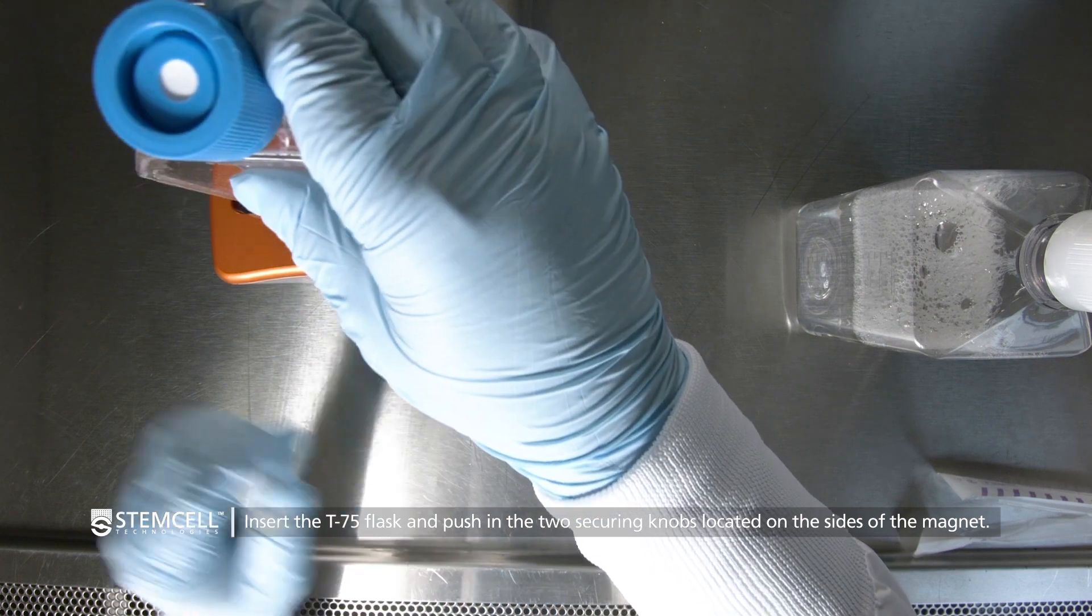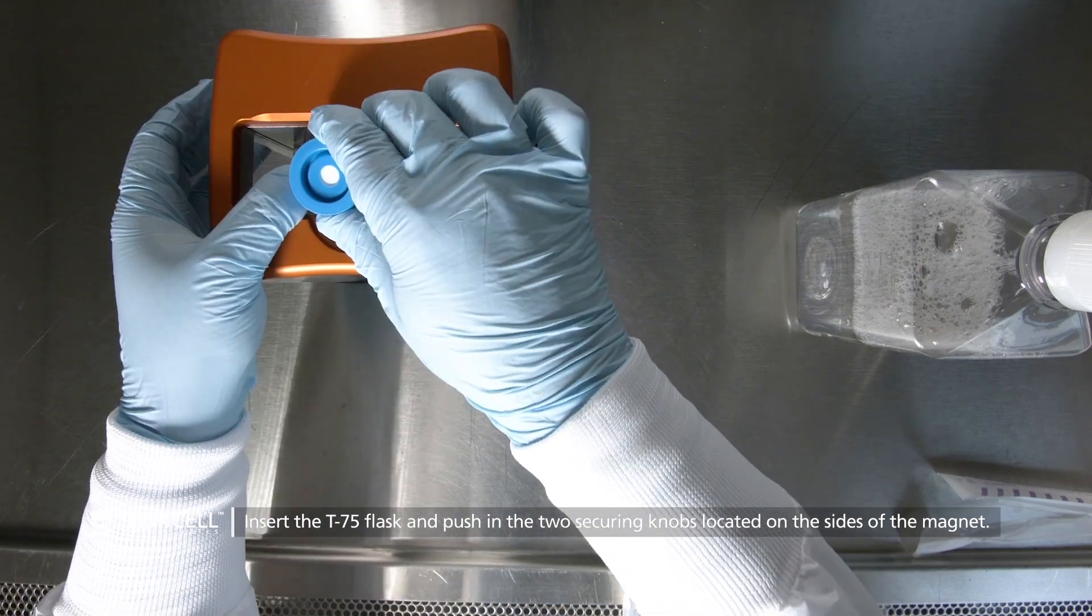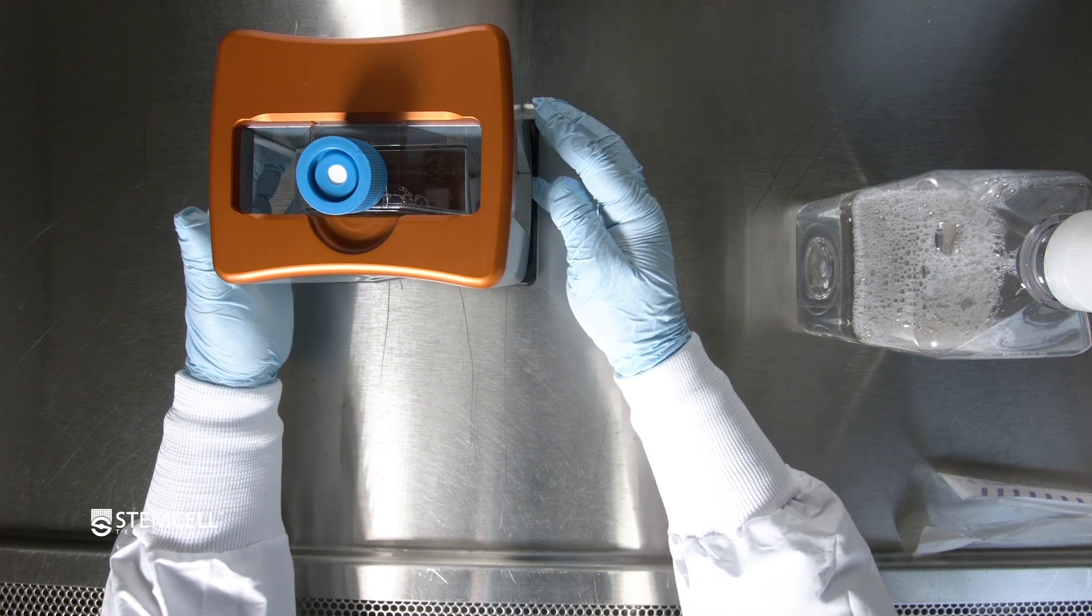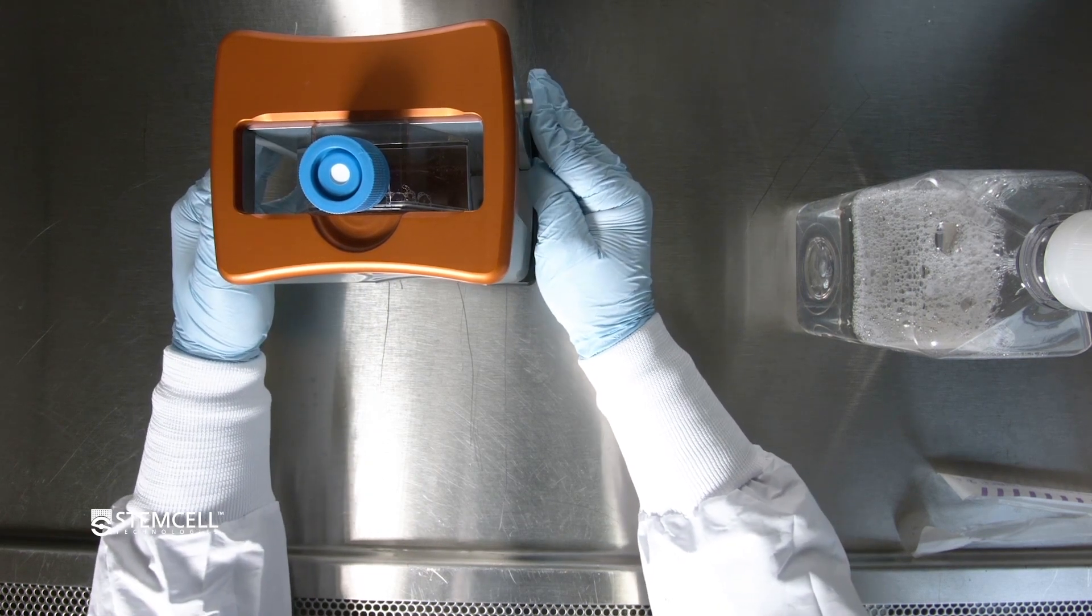Then, insert the T75 flask and push in the two securing knobs located on the sides of the magnet. This will release the spring to ensure the flask sits tightly in the magnet.